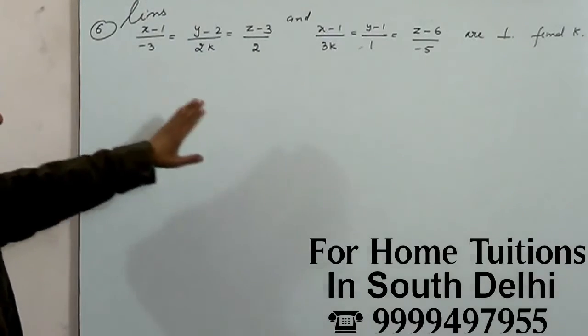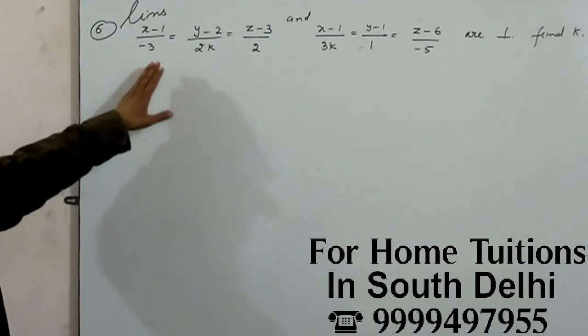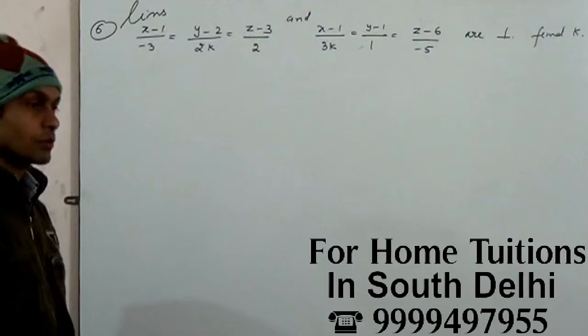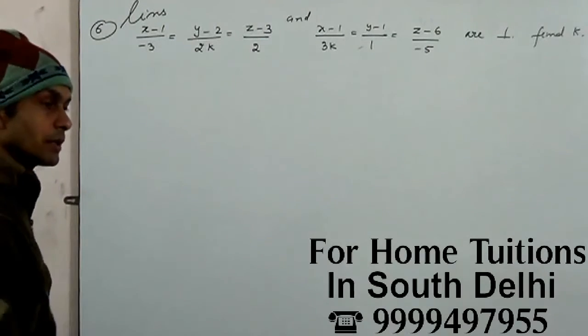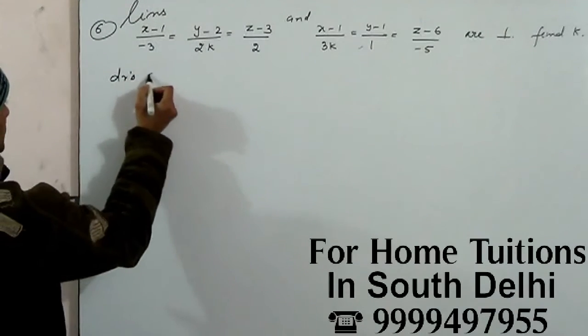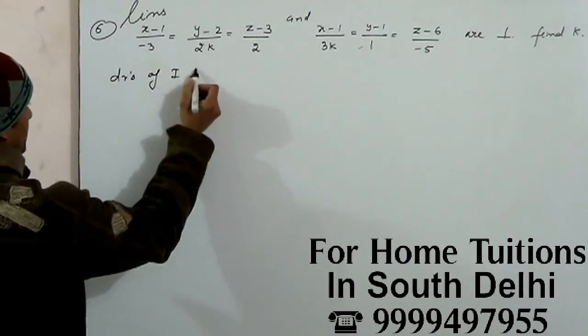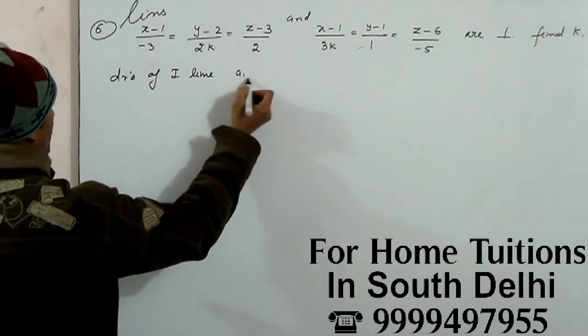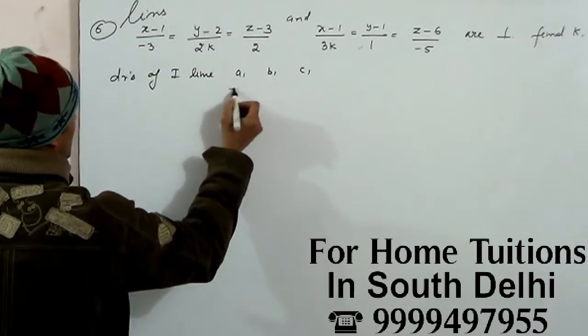These two are the same thing here. So, the first line is the direction ratio of minus 3, 2K and 2. Direction ratio of first line, A1, B1, C1, minus 3, 2K and 2.